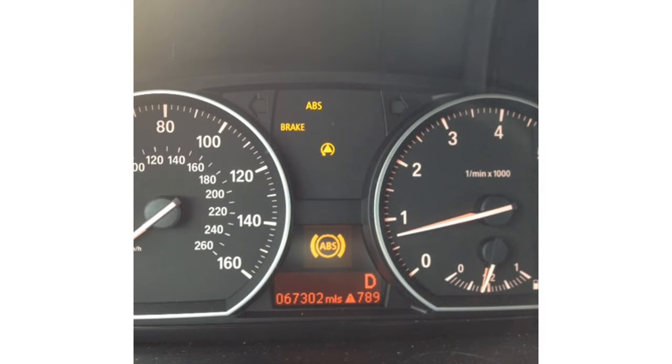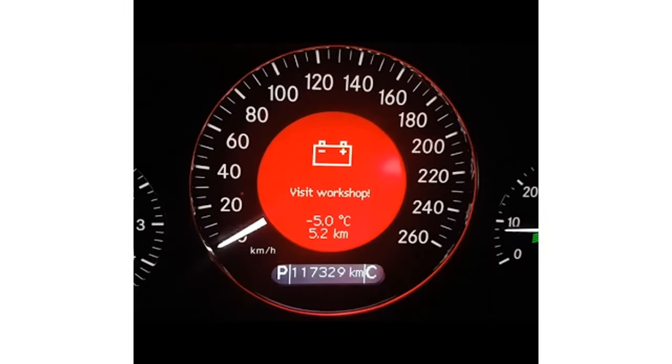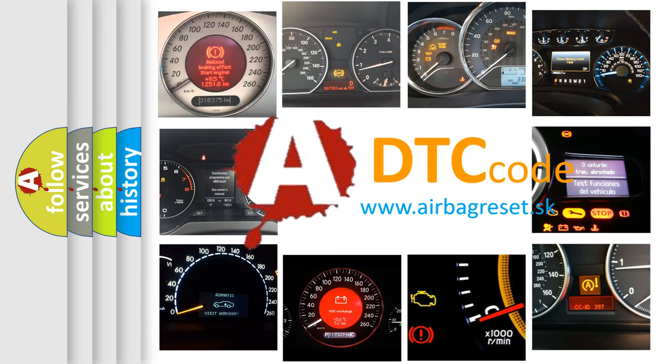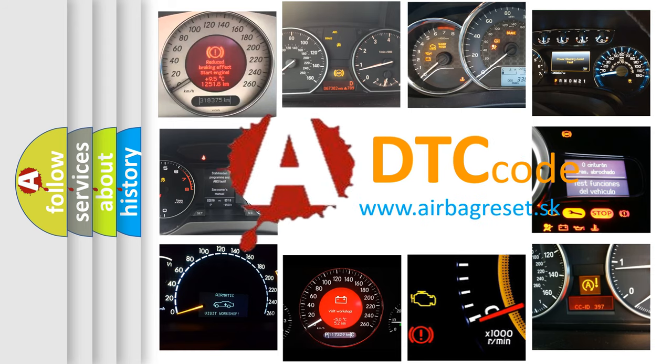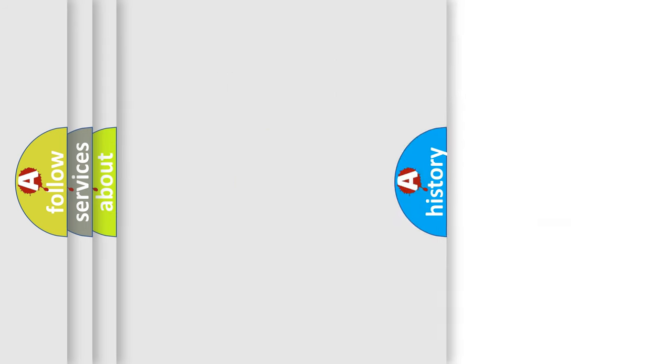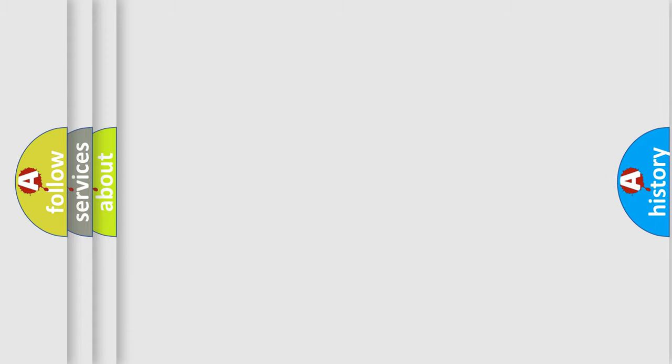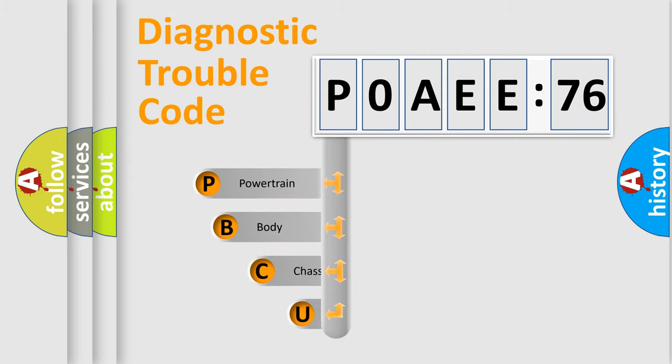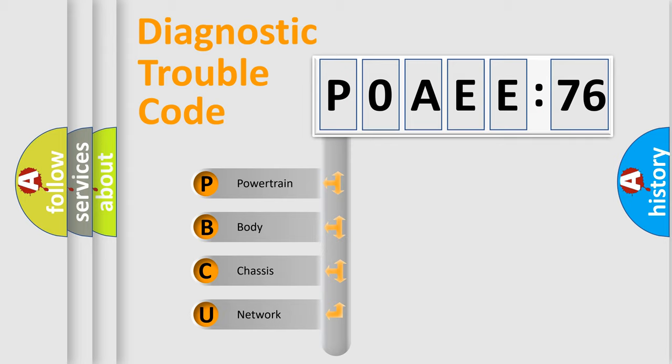First, let's look at the history of diagnostic fault code composition according to the OBD2 protocol, which is unified for all automakers since 2000. We divide the electric system of the automobile into four basic units: Powertrain, Body, Chassis, and Network. This distribution is defined in the first character code.